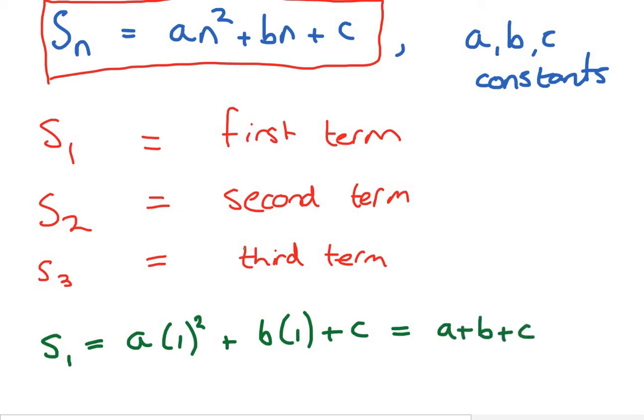So, that is our formula one done. The first term of our sequence is the same as the three coefficients. Nice and easy. So, tick. We've done number one.